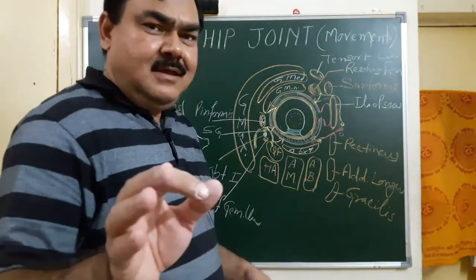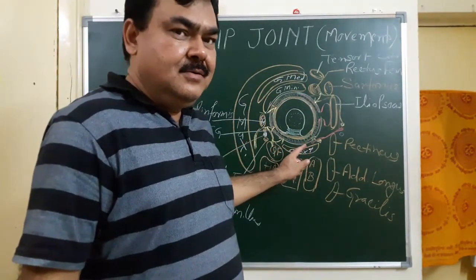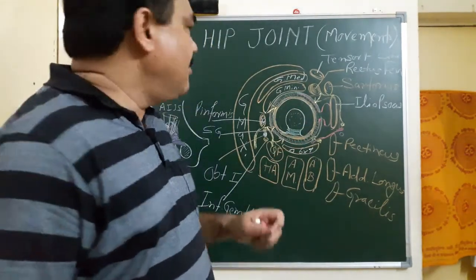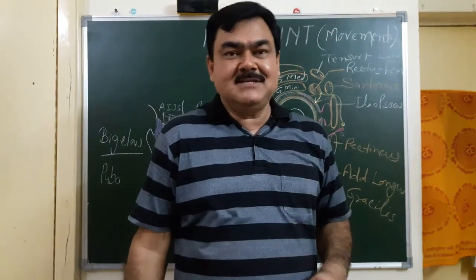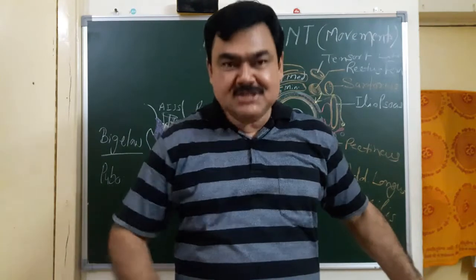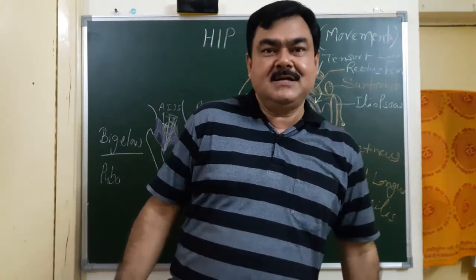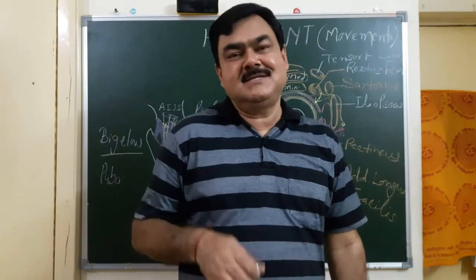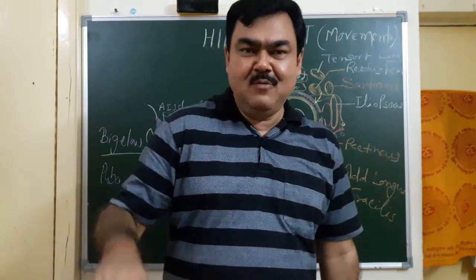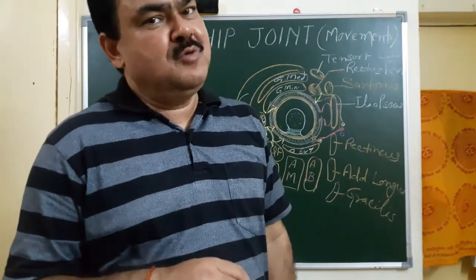Now we'll discuss the movements at the hip joint. In previous lectures you have seen the relations of the hip joint. By this diagram you can explain the movements at the hip joint. Flexion and extension take place around the transverse axis. Adduction and abduction occur around the anterior-posterior axis. Medial rotation and lateral rotation occur around the vertical axis. Circumduction is a combination of all movements.